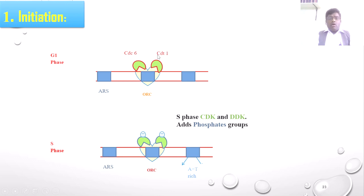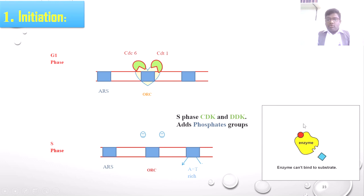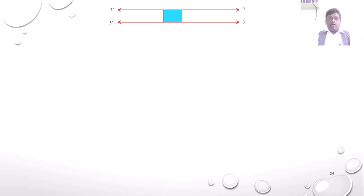Once CDC6 and CDT1 are released from the ORI, the ORI is free to bind with helicase. Helicase is recruited to the ORI region along with two proteins: CDC45 and the GIN protein. Not only helicase plays a role in unwinding — helicase requires CDC45 and GIN enzymes. This whole CMG complex plays a vital role to melt and unwind the DNA.